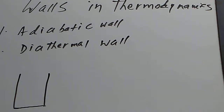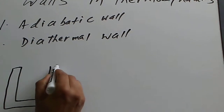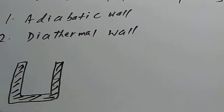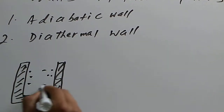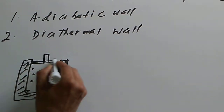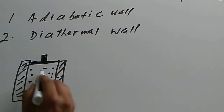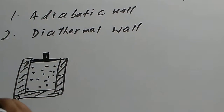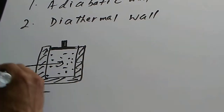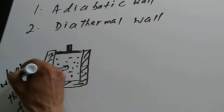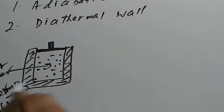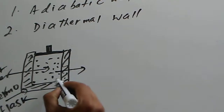An adiabatic wall is like a thermoflask. A thermoflask has a very thick wall with many reflective surfaces. Let's say we have hot water inside the thermoflask, and we close it with an insulating cork. The walls of the thermoflask do not allow heat to go out.